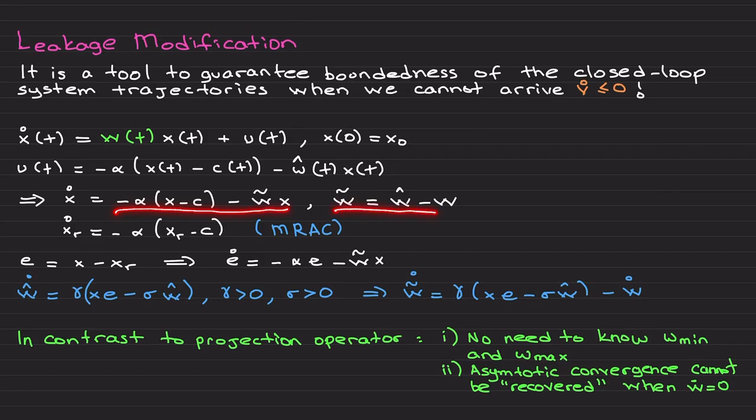W tilde here is w hat minus w, following the motivation from the to adapt or not to adapt video. We are considering model reference adaptive control. Here is the reference model capturing the ideal closed-loop system performance in the absence of system uncertainties.